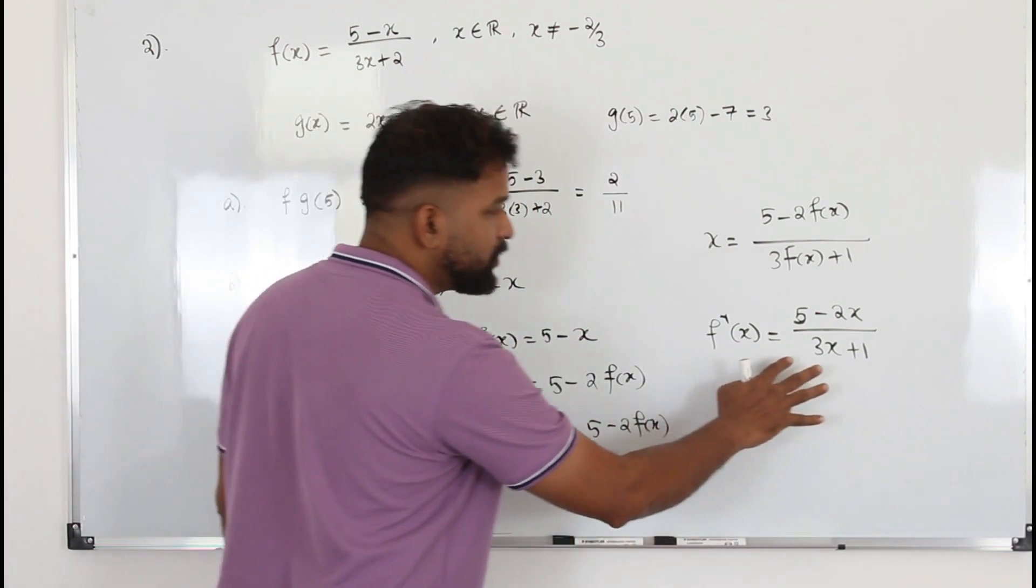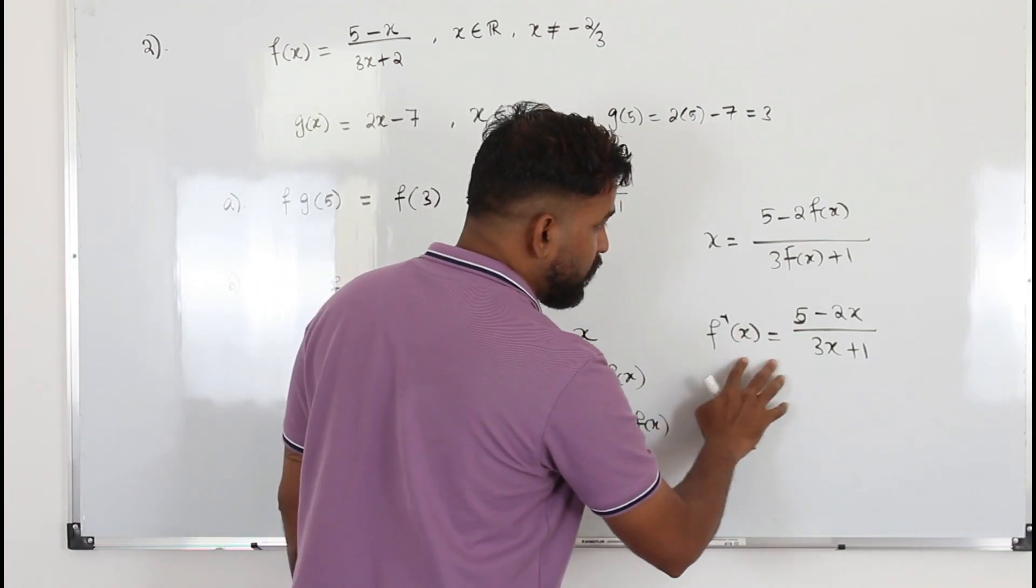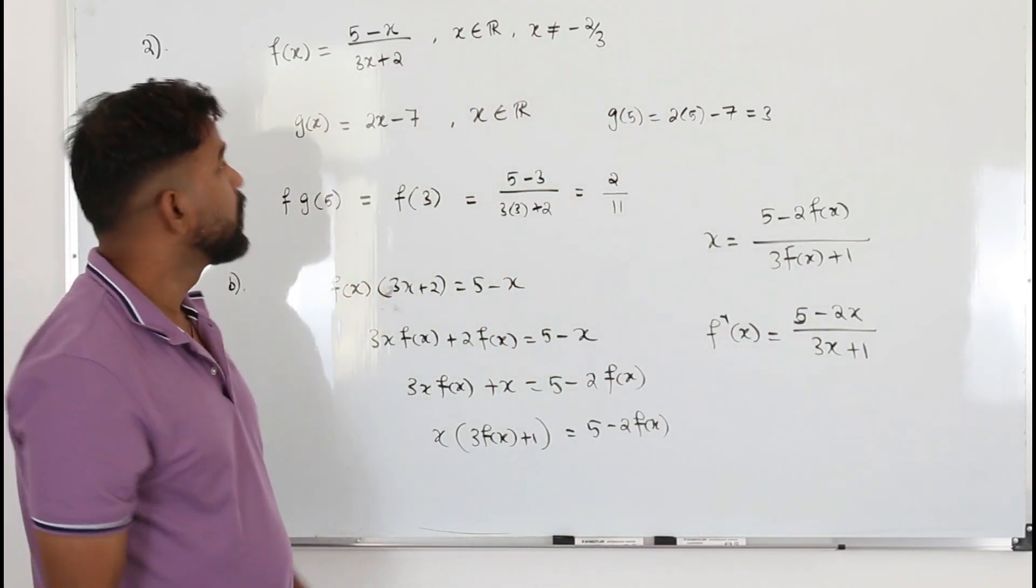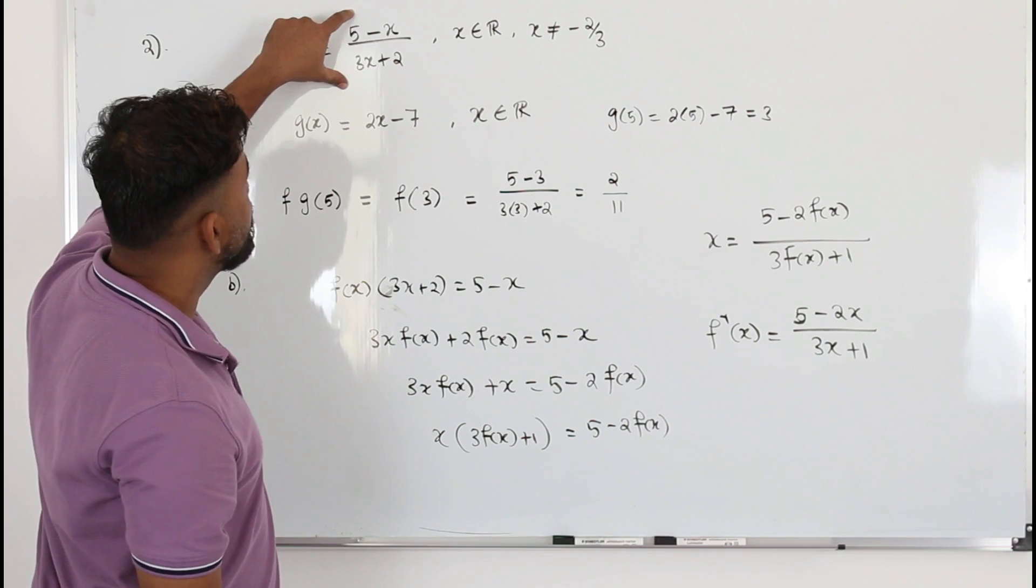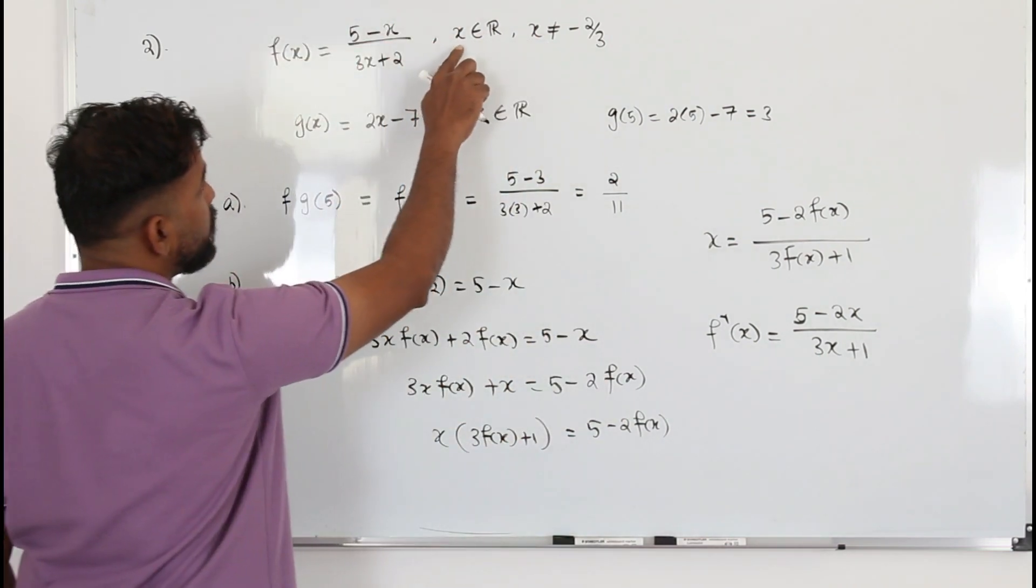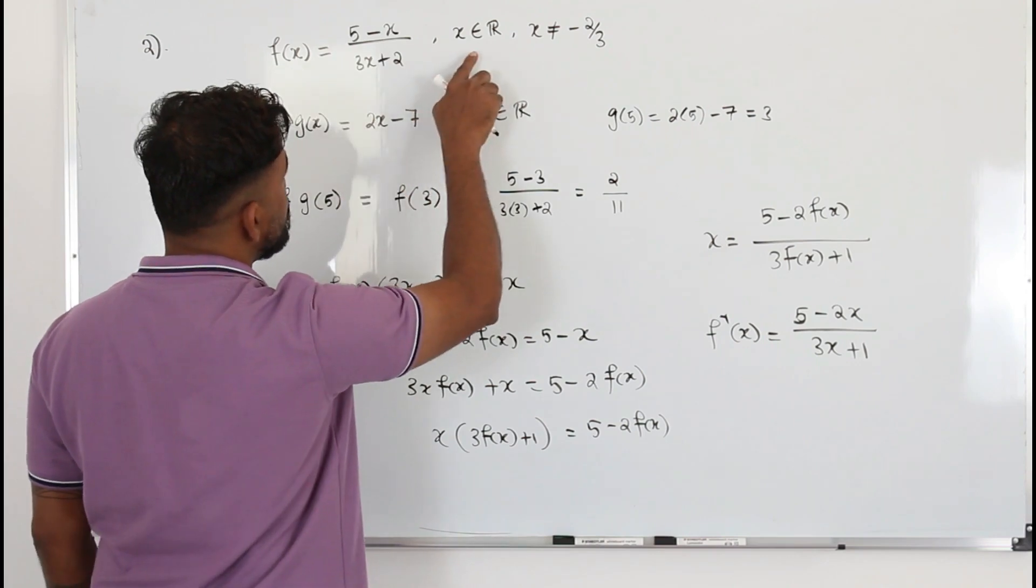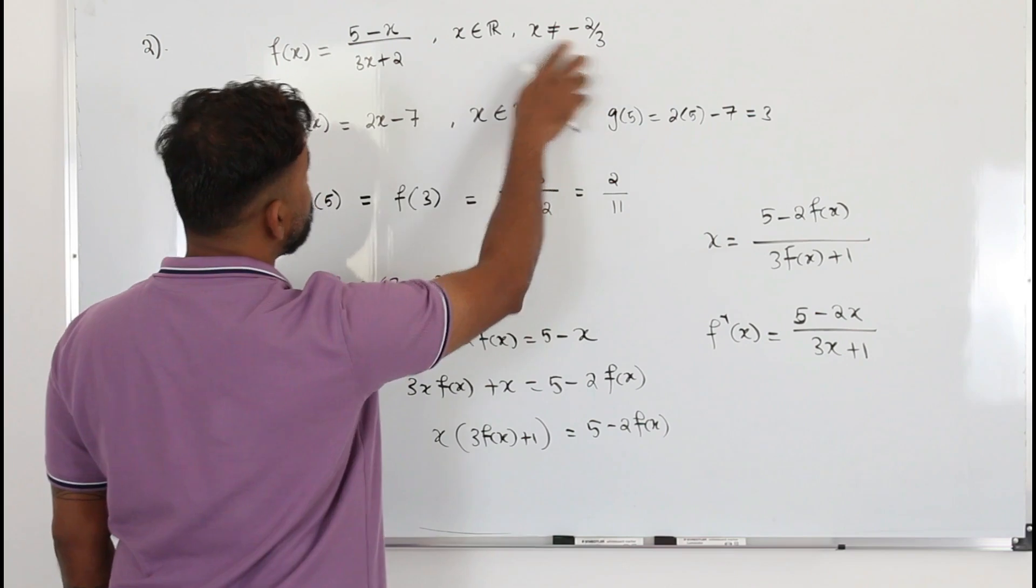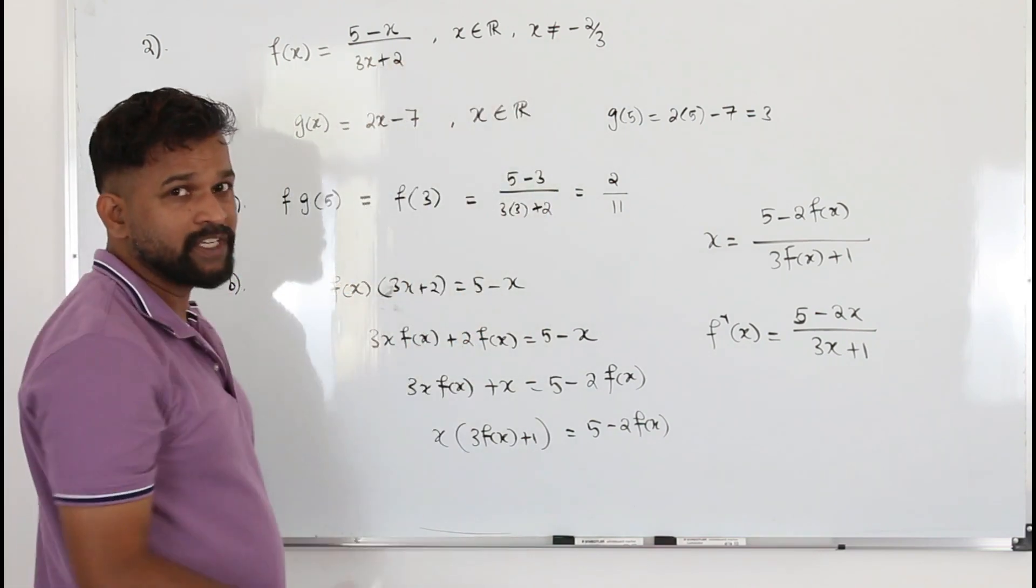So how do we find the domain? The domain of f inverse is same as the range of this function. So you see, for this reciprocal function, it's not very easy to find the range. So if you look at the domain of f(x), x takes all the real numbers, but not this number. Because if you put this number, the division becomes zero, which is not permitted.